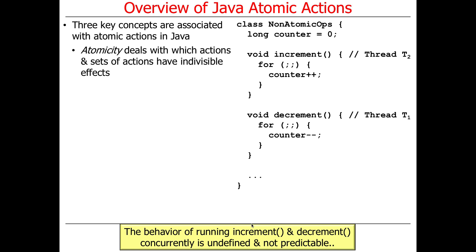The act of incrementing a non-atomic field like counter is undefined — there's no telling what the value will be. It might be random garbage, probably not something consistent, and certainly not predictable. That's because there's no way to ensure exclusive atomic access. Even though ++ and -- appear syntactically to be indivisible, in reality they involve moving a value from memory into a register, incrementing or decrementing it, then writing it back — with all kinds of opportunities for interleaving and caching issues.